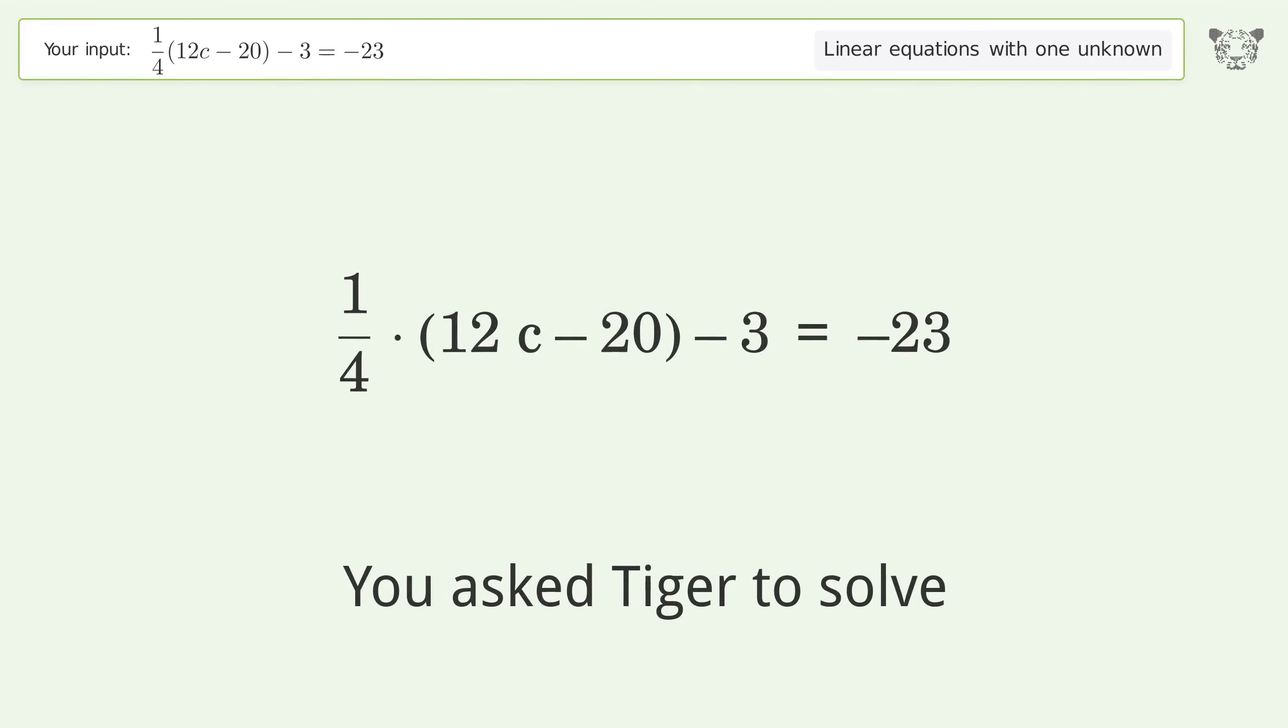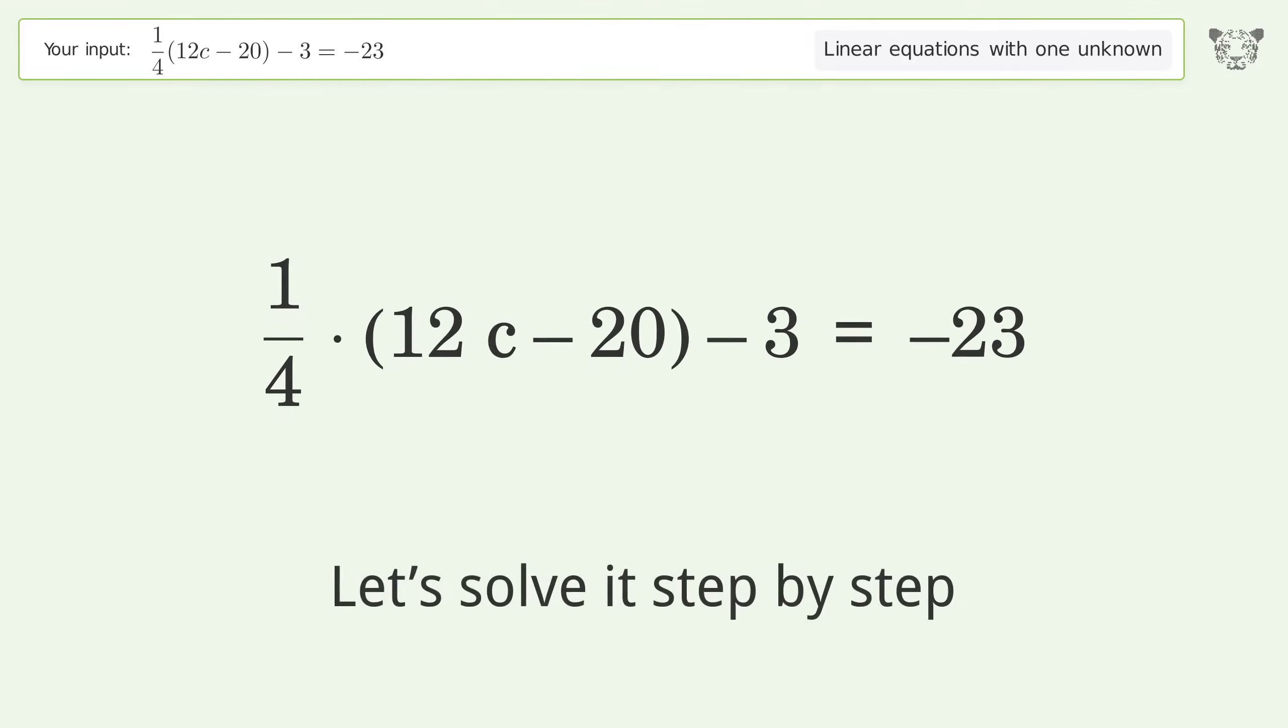You asked Tiger to solve this problem dealing with linear equations with one unknown. The final result is c equals negative 5. Let's solve it step by step. Simplify the expression.